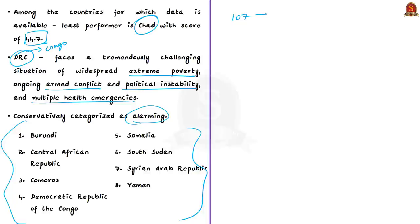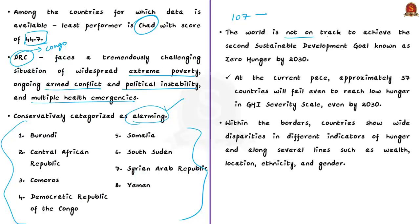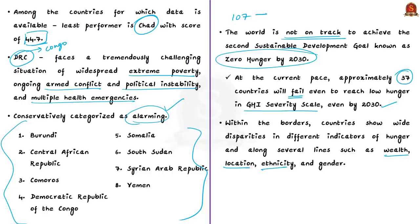The report does not name any country in the extremely alarming category, but categorizes these countries as alarming. An important cause of concern is that the report observes the world is not on track to achieve the second Sustainable Development Goal — zero hunger — by 2030. At the current pace, approximately 37 countries will fail even to reach low hunger on the GHI severity scale by 2030. Even within borders, countries show wide disparities in indicators along lines such as wealth, location, ethnicity, and gender.